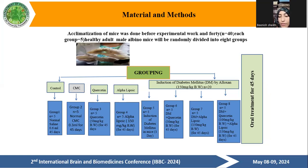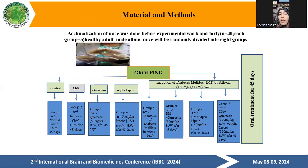Group five: induction of diabetes mellitus only. Group six: diabetes mellitus plus quercetin, 50 mg per kg body weight for 45 days. Group seven: diabetes mellitus plus alpha lipoic acid, 150 mg per kg body weight for 45 days. Group eight: diabetes mellitus plus quercetin and alpha lipoic acid, 150 mg per kg body weight for 45 days. Oral treatment for 45 days.